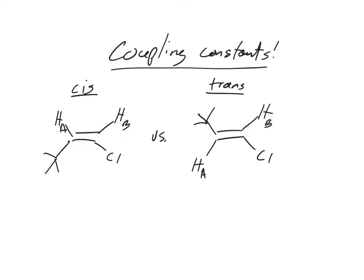So if you're cis, it'd be a doublet and your coupling constant would be 10 hertz. If you're trans, your coupling constant is going to be bigger, it's going to be 15 hertz.